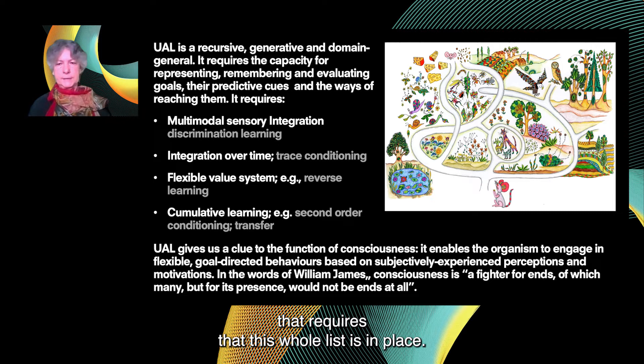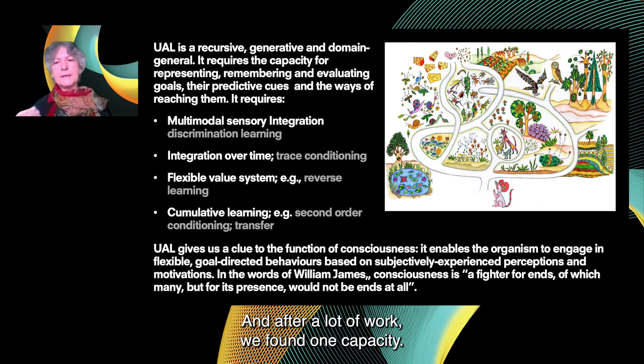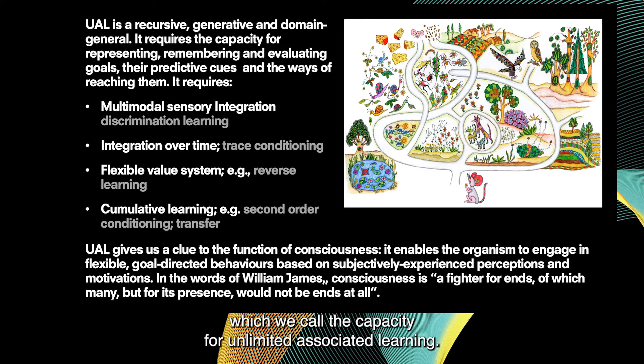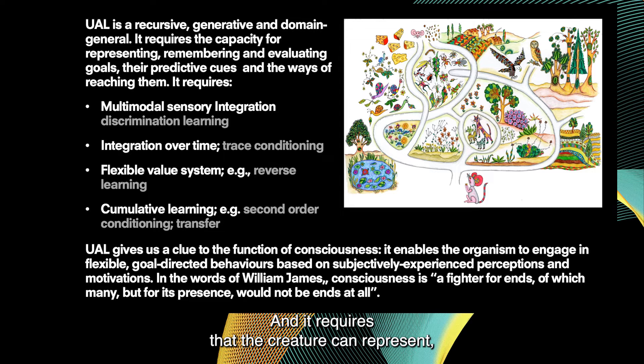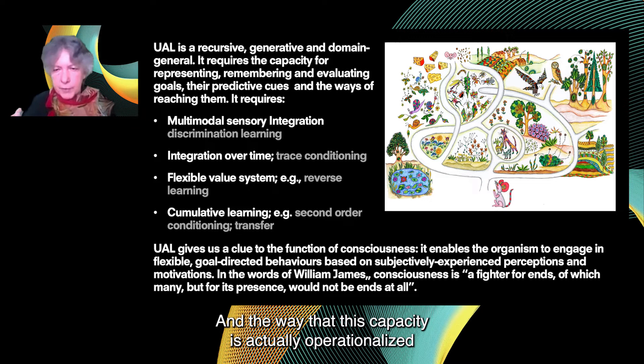After a lot of work, we found one capacity. We called it the capacity for unlimited associative learning — a form of learning that is recursive, generative, and domain-general. It requires that the creature can represent, remember, and evaluate goals, their predictive cues, and the ways of reaching them.